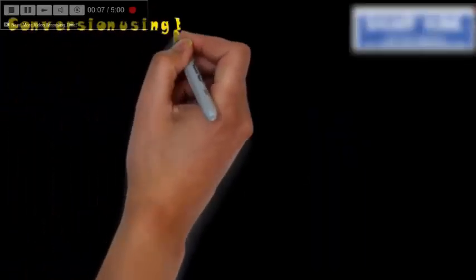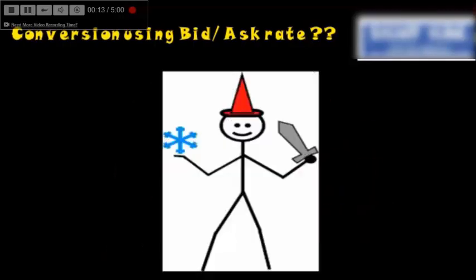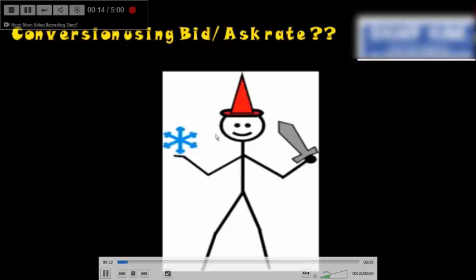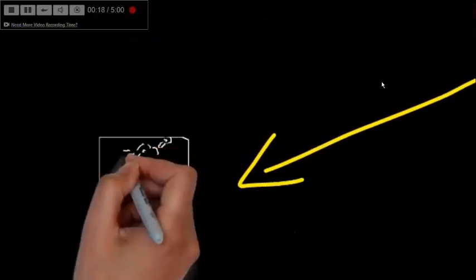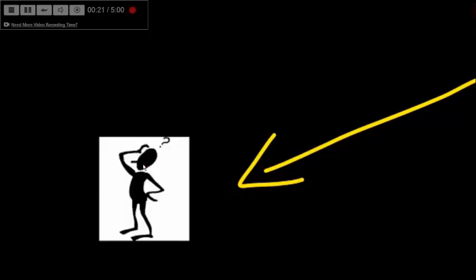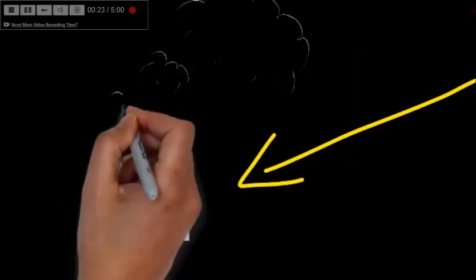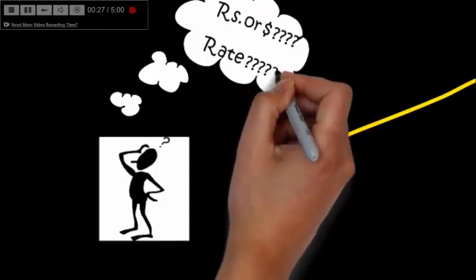This is about conversion using bid and ask rate. Bid rate is the buying rate and ask is the selling rate. He was very happy after completing his foreign exchange chapter, but when someone asked him to convert currencies, he used to get confused at which rate he shall take.